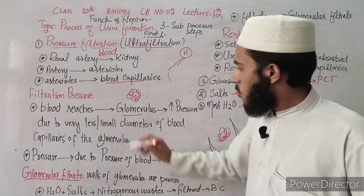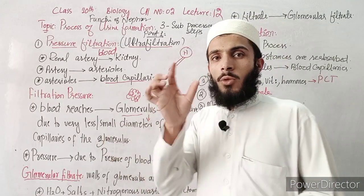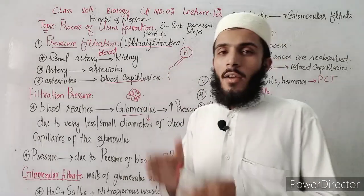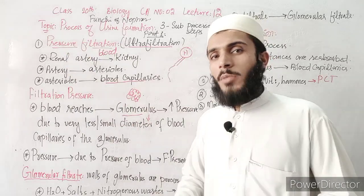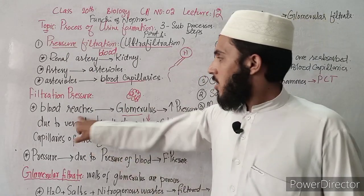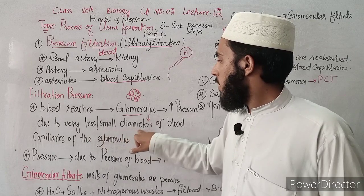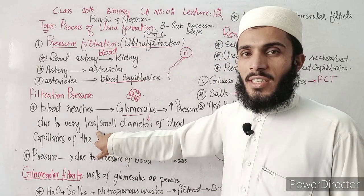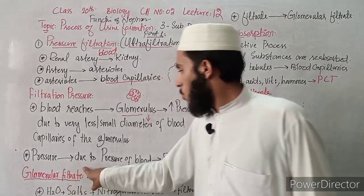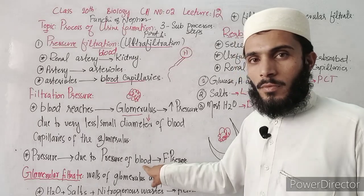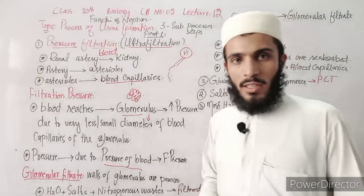The diameter of the efferent blood capillaries of the glomerulus is less compared to the afferent side. Because of this difference in diameter, the pressure inside the glomerulus is very high. This pressure is due to the blood pressure within the capillaries.